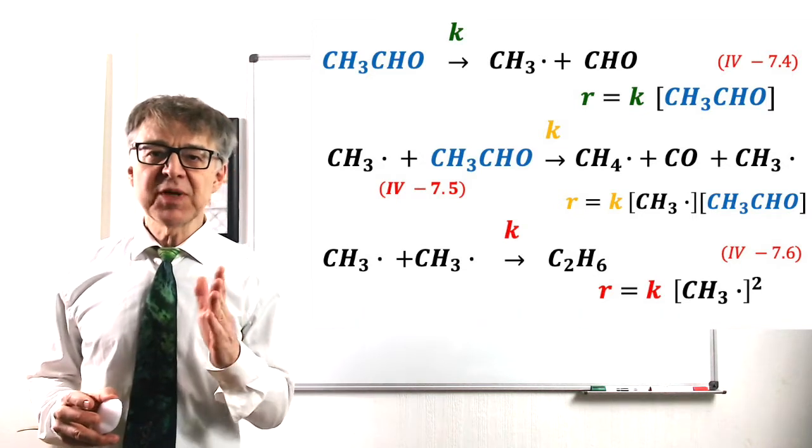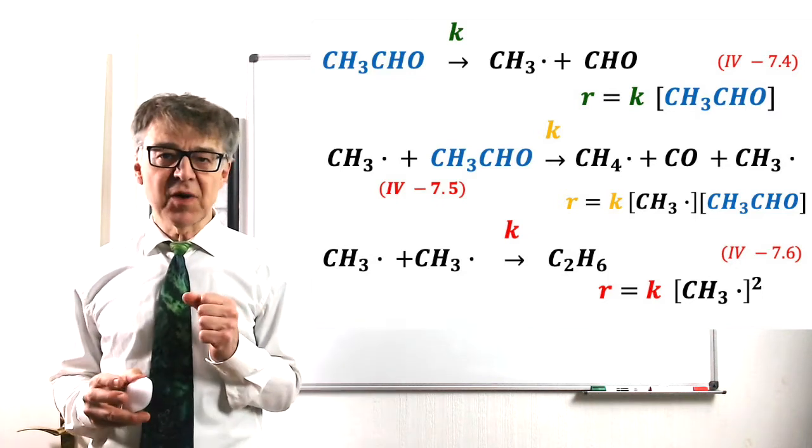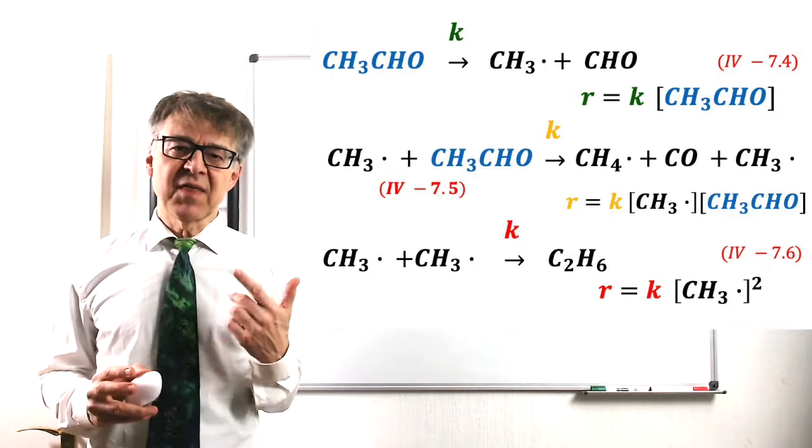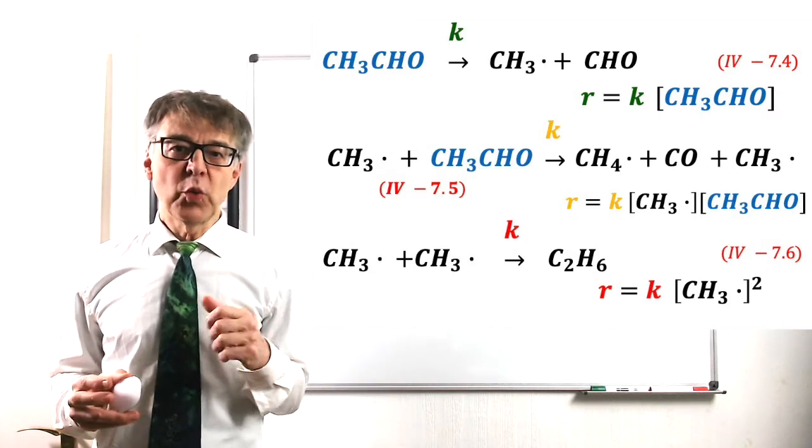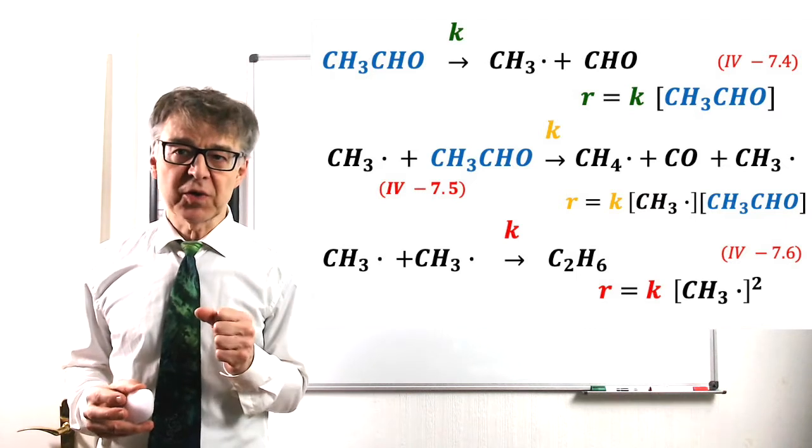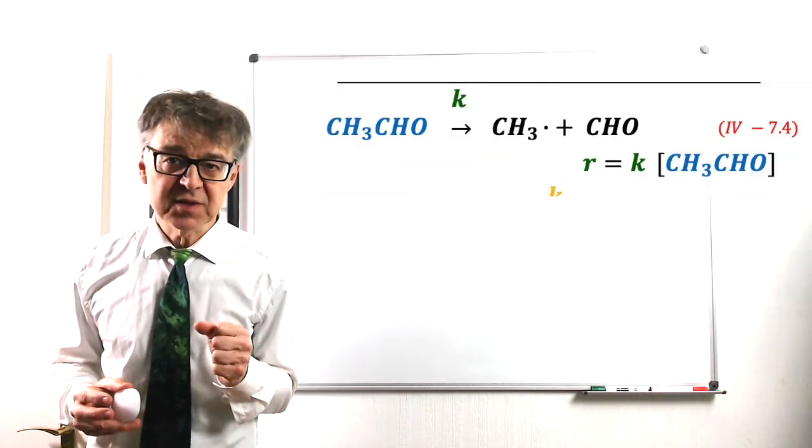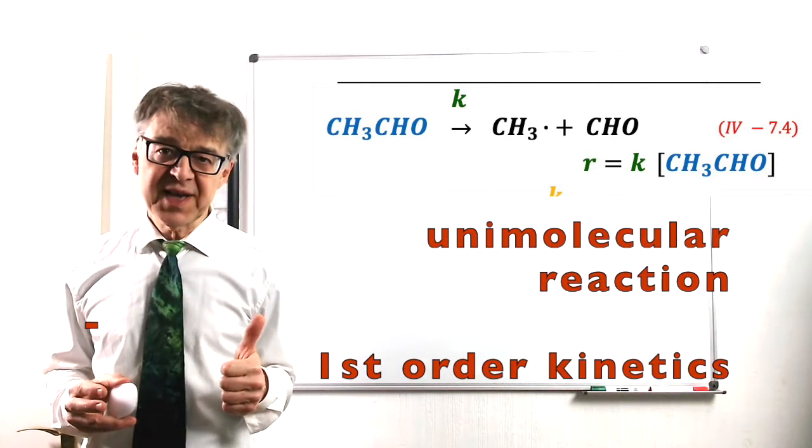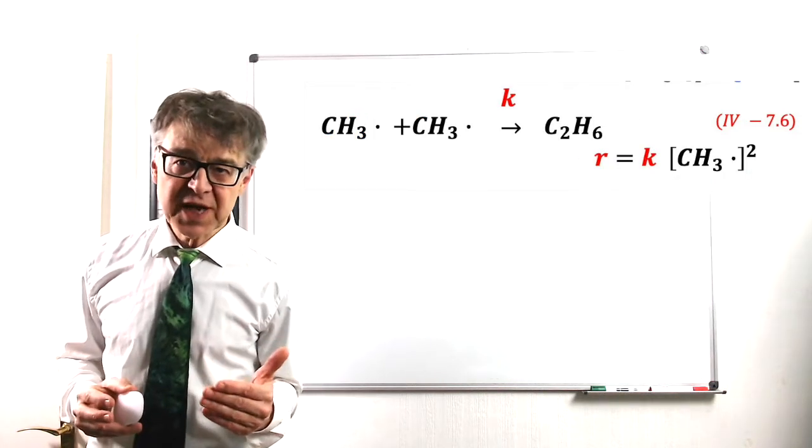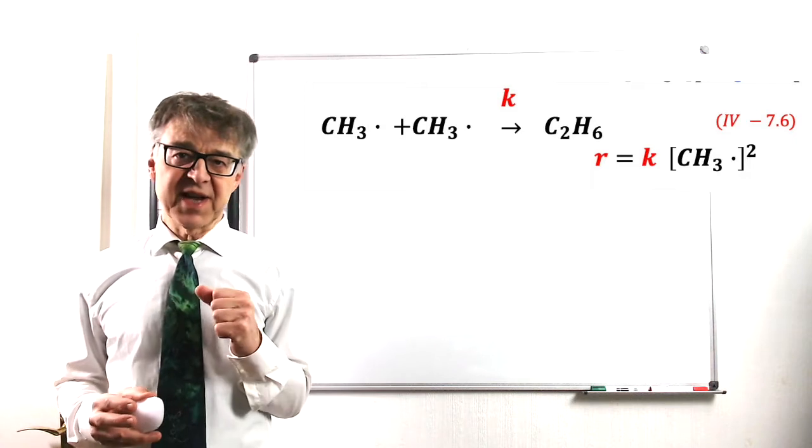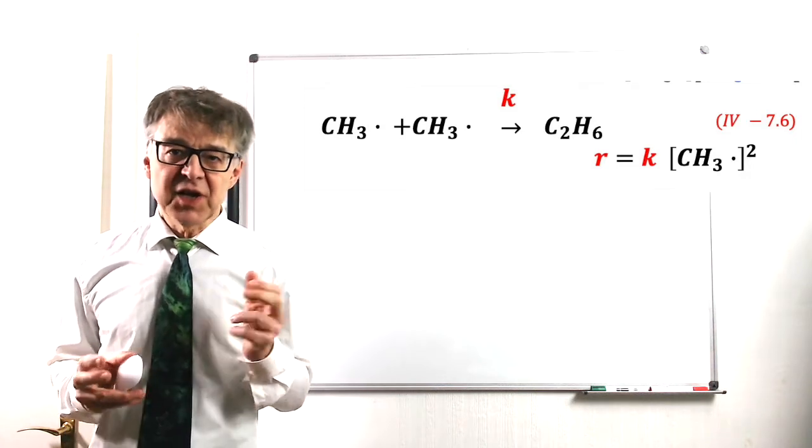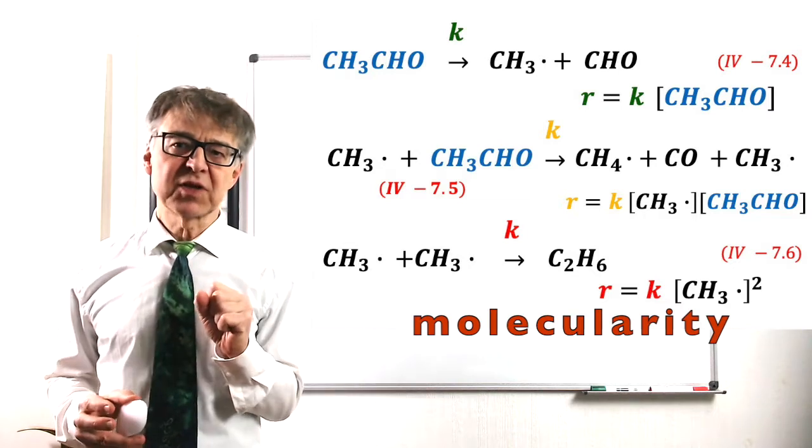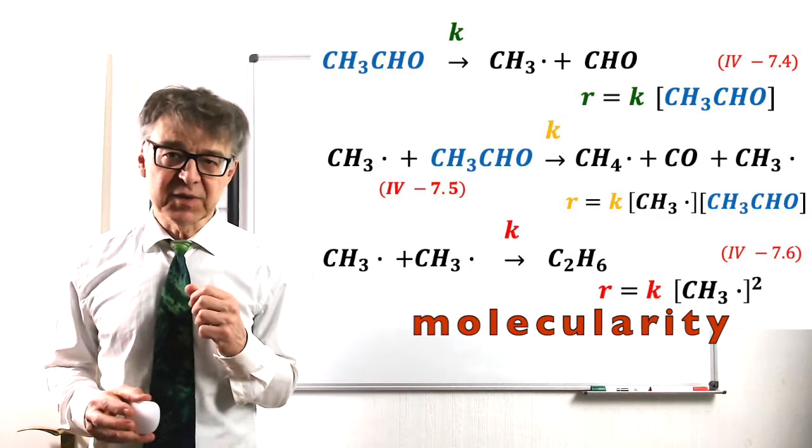Each elementary reaction has simple kinetics, as described earlier, but the interlocking of the reactions complicates the overall kinetics. We can even predict the reaction order for elementary reactions. Unimolecular reactions show a first-order kinetic, and bimolecular reactions show a second-order kinetic. The terms unimolecular and bimolecular describe how many reactant molecules are involved in the transition state.